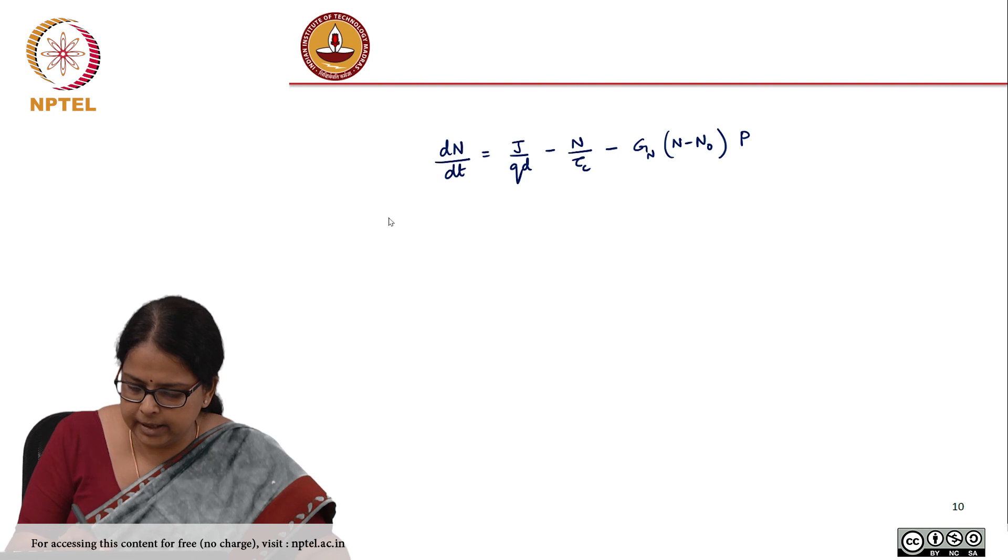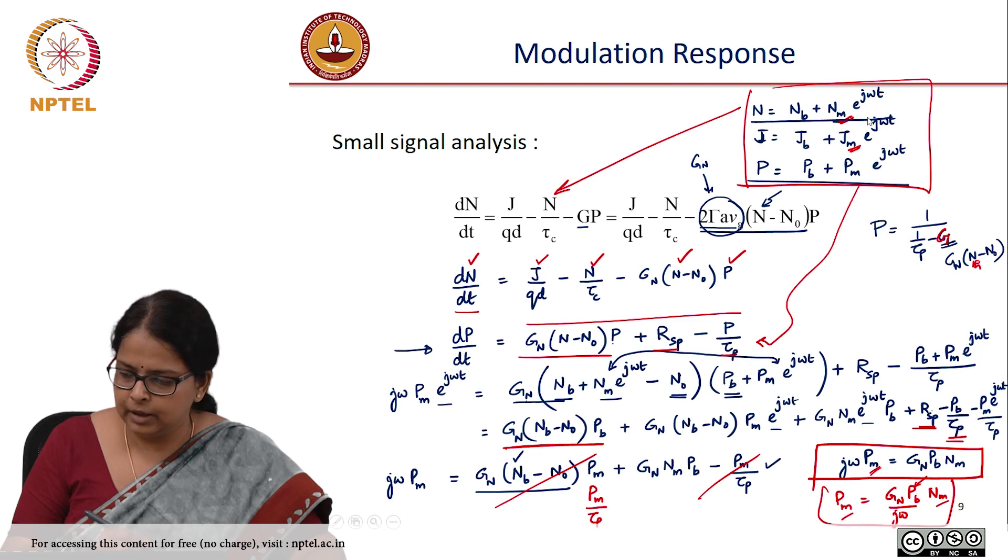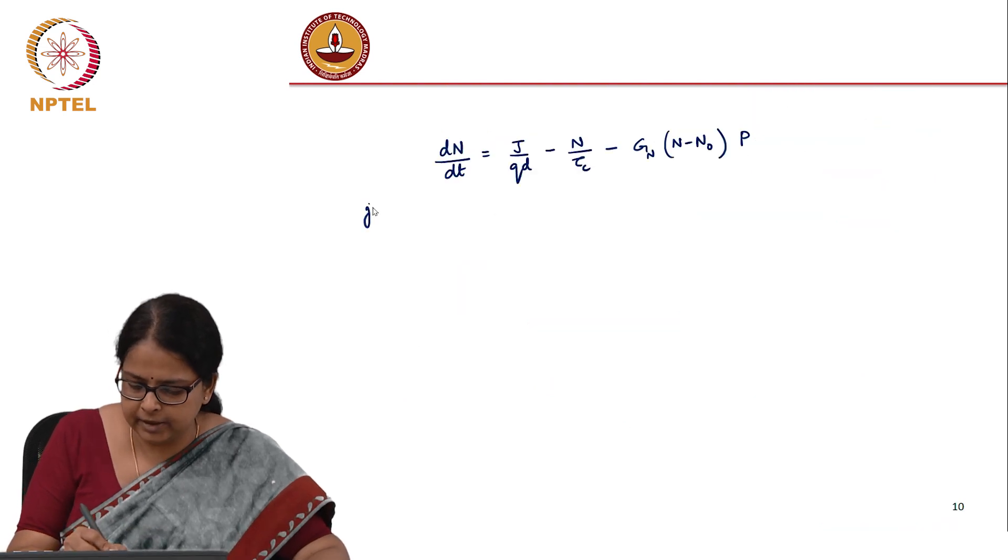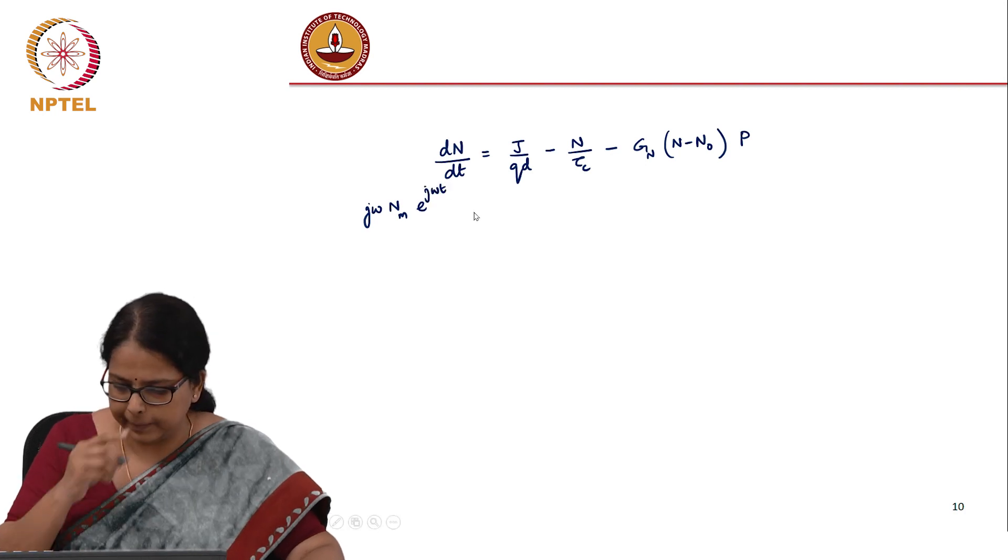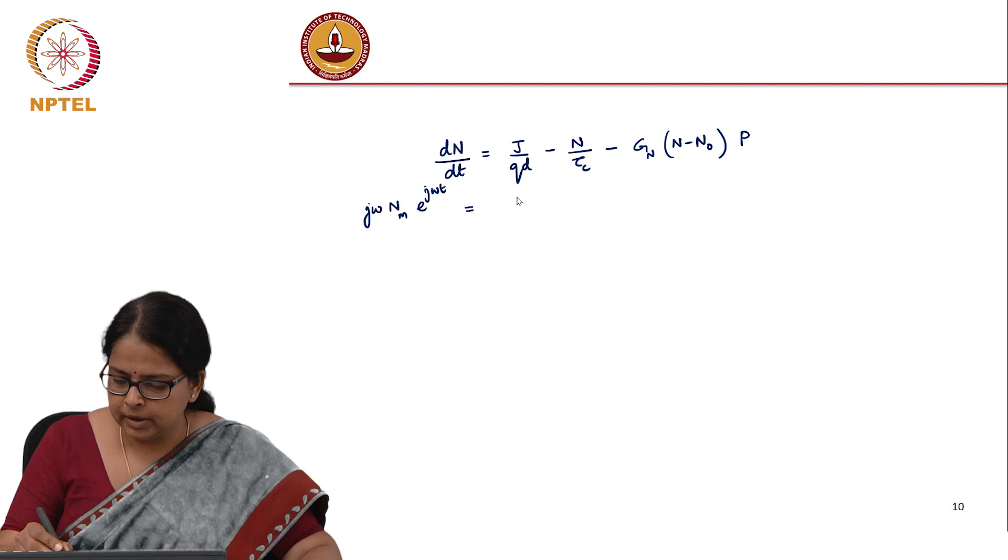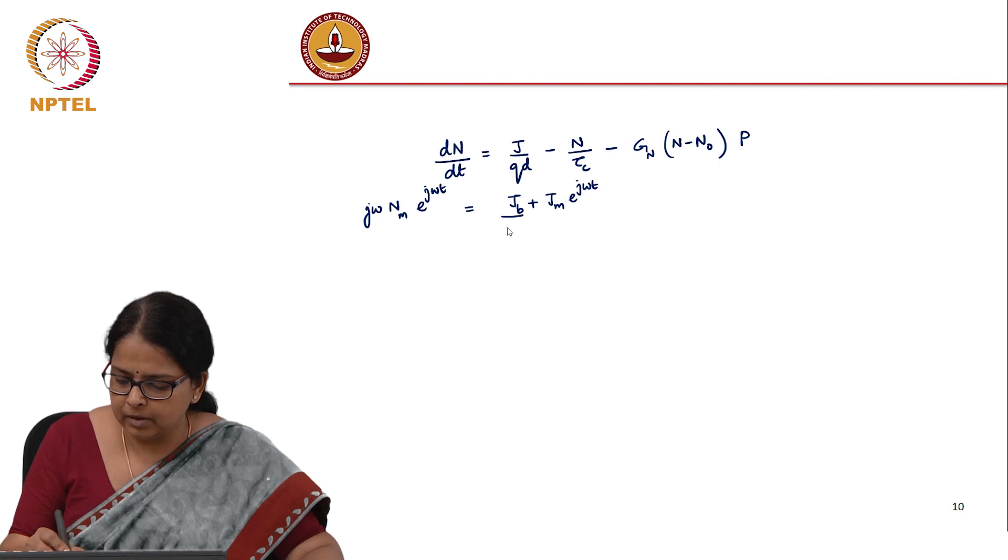dn/dt is derivative with respect to time. This is going to be simply j*omega*n_m*e^(j*omega*t) equals j_b plus j_m*e^(j*omega*t) divided by qd.